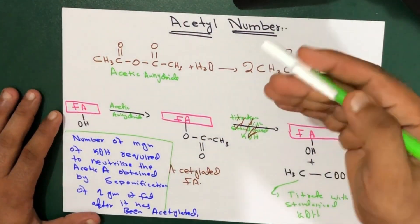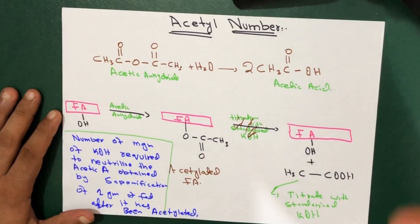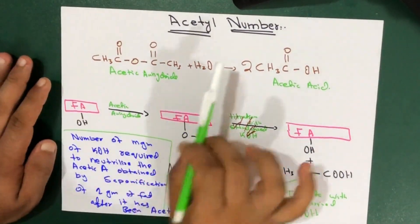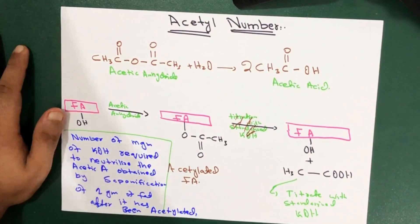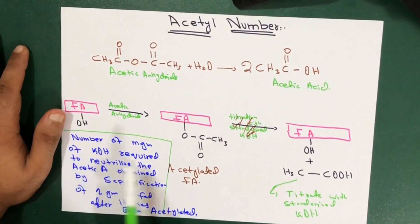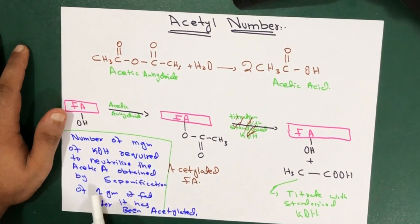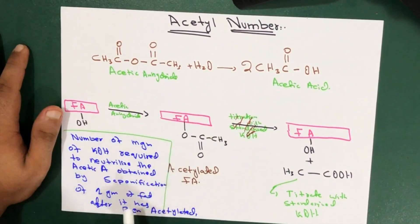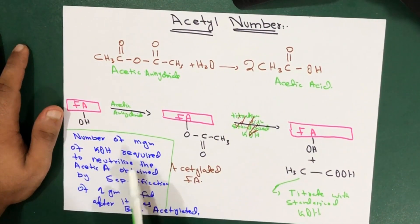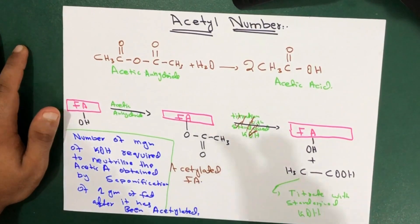Let's start by reading the definition of the Acetyl Number, then understanding it in an easy and simple way. The Acetyl Number is the number of milligrams of potassium hydroxide — the base — required to neutralize the acetic acid obtained by saponification. We know that when an acid and base react together they neutralize, which is called saponification, producing soap.